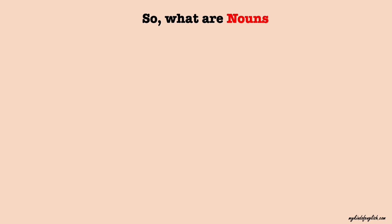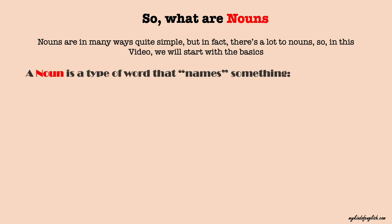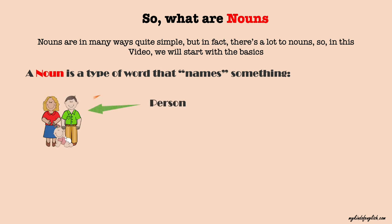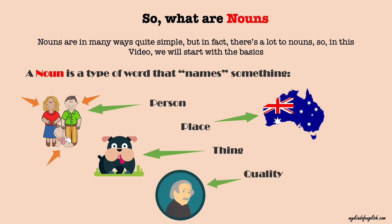So, what are nouns? Nouns are in many ways quite simple, but in fact there's a lot to nouns, so in this video we will start with the basics. A noun is a type of word that names something, such as a person — dad, mum, child — a place, such as Australia, a thing, such as a dog, a quality, such as genius, or an action, such as skating.